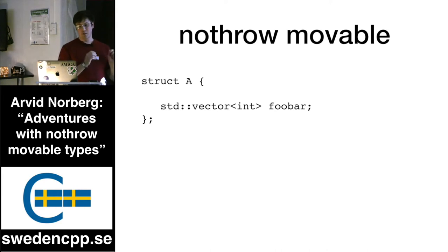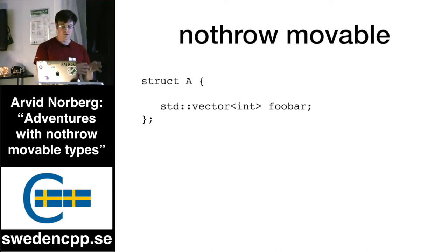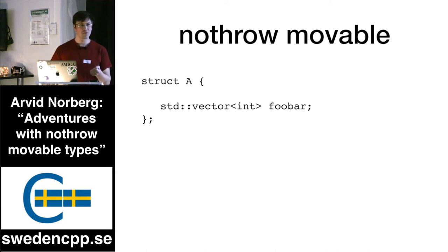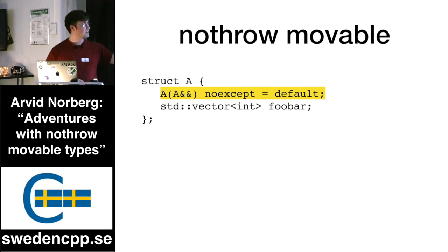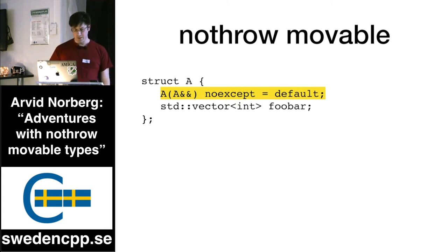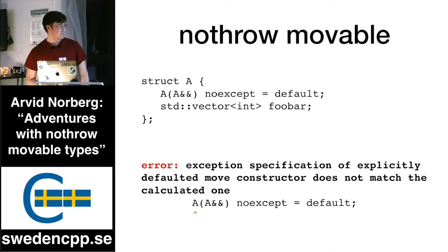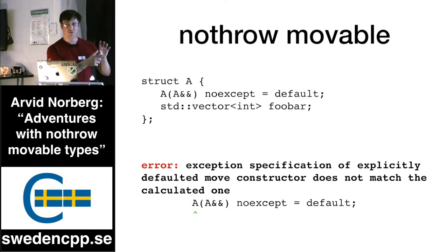First of all, I'm working in C++11 here — I was constrained to C++11. If you look at this struct you would imagine it's nothrow move constructible, but it isn't. So I figured: what if I force it to be nothrow move constructible? I say there is a move constructor, it is `noexcept`, and you figure out what the implementation is with `= default`. But I encountered an error saying basically: no, it isn't `noexcept`, so you can't make it default.